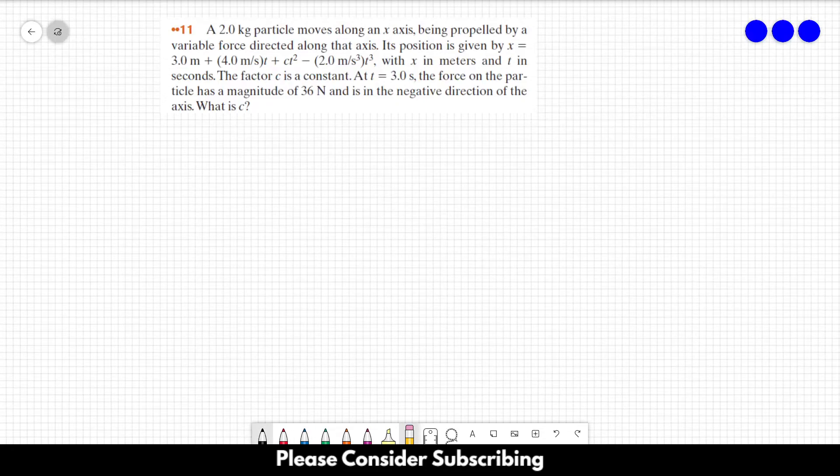Number 11. A 2 kg particle moves along an x-axis being propelled by a variable force directed along that axis. Its position is given by x equals 3 plus 4t plus ct squared minus 2t to the third, with x in meters and t in seconds.